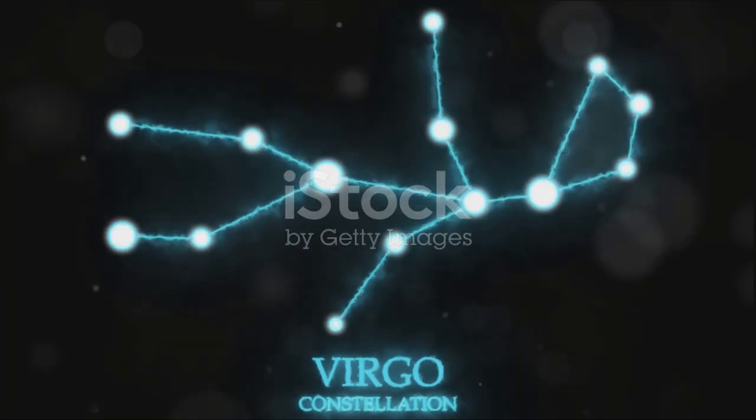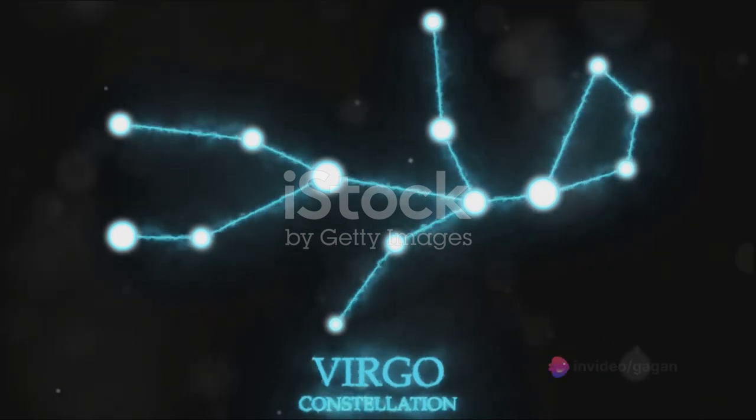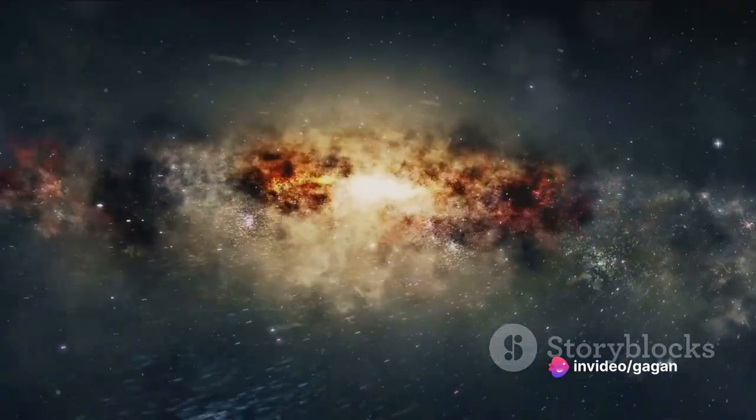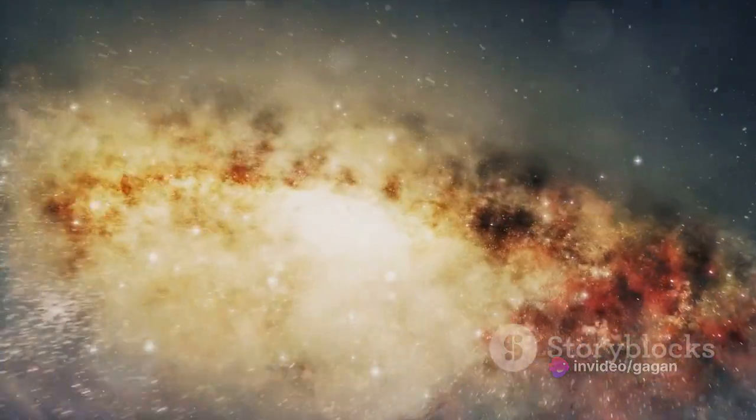The Virgo cluster, home to hundreds of galaxies, including the Milky Way, is bound together by gravity. This gravitational tether means that galaxies within it can interact and merge over vast timescales.